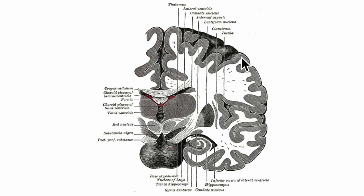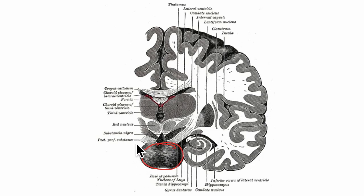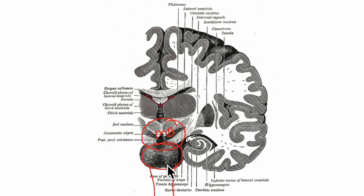In this diagram you can see the frontal cross section of the structures of the brain. Here you have the pons. As we had seen in the earlier diagram, above the pons comes the midbrain. So we have the midbrain, pons, and finally beneath it there is the medulla. These three structures form the brainstem.